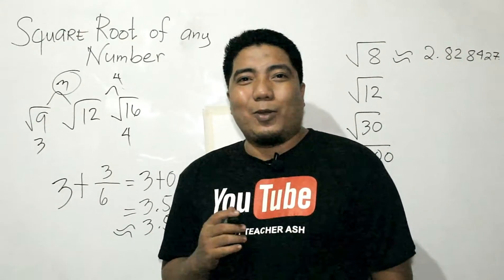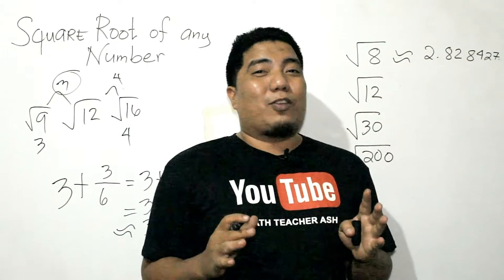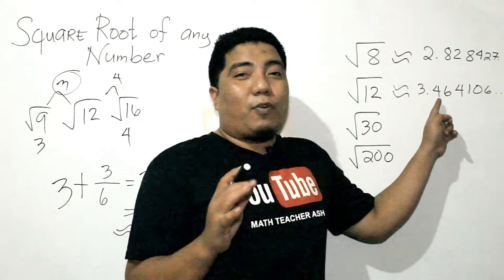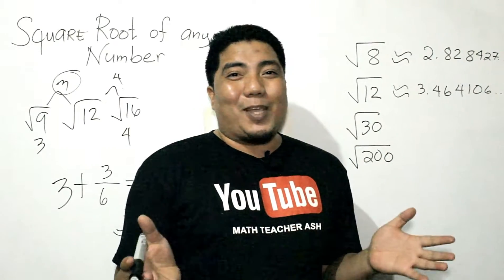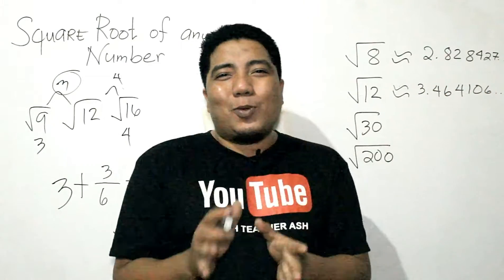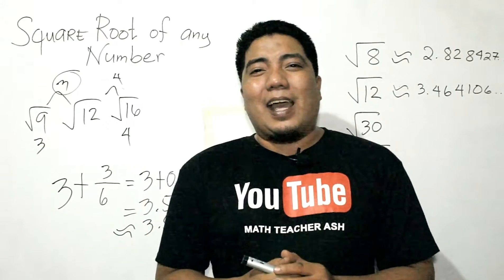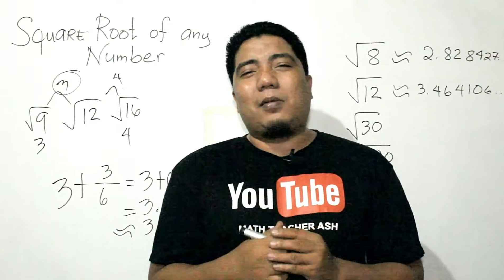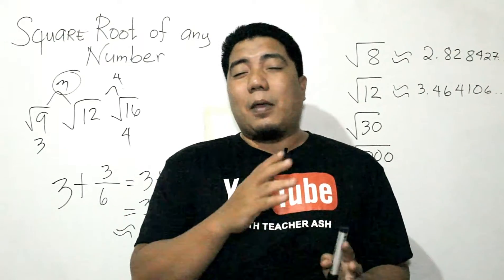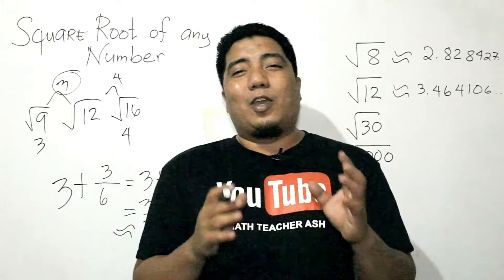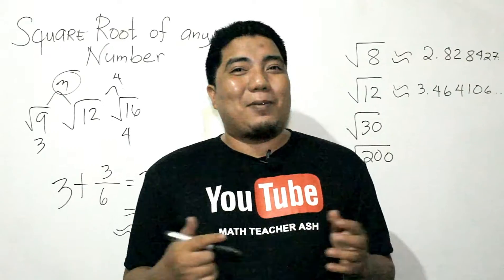Let us check whether we are correct. Using the calculator, the approximate value of square root of 12 is 3.4641060 and so on. If you round this off, you are near 3.5. This technique is very handy, especially if you have a test that is multiple choice, because you will know the nearest approximate value of those given numbers.